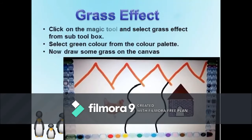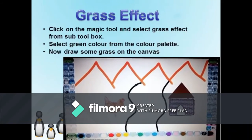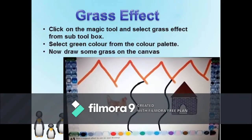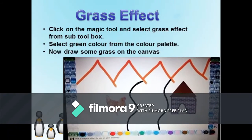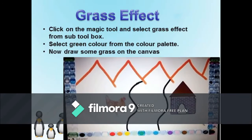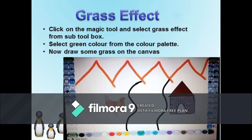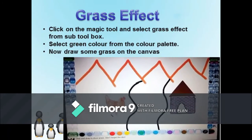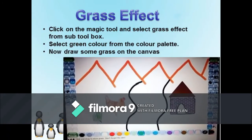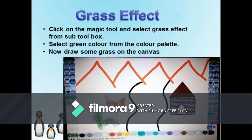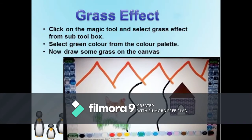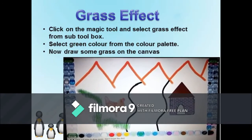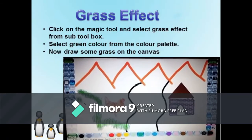Using Grass Effect: It is used to give a grass effect in the drawing. Click the magic tool and select the grass effect from the sub-tool box. Select green color from the color palette. Now draw some grass by clicking on the canvas.